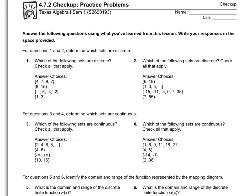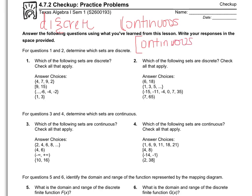For number one, which sets are discrete? Remember, discrete sets have the fancy brackets; continuous sets have parentheses or square brackets. So the discrete ones are the first, third, and fourth sets — they all have fancy brackets. For question three, the continuous sets are the ones with parentheses or square brackets — there were two with parentheses.